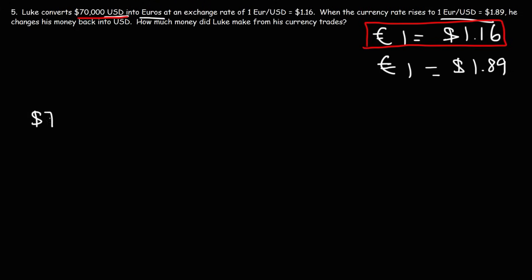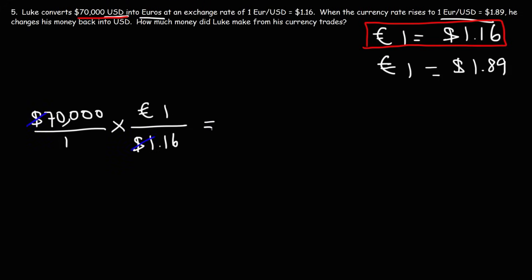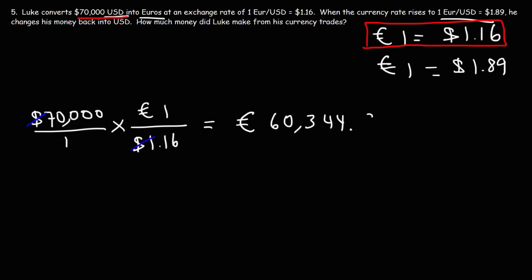We have $70,000 over 1, and since $1.16 corresponds to 1 euro, we put dollars on the bottom so the dollar units cancel. Because 1.16 is on the bottom we divide: 70,000 divided by 1.16 equals 60,344.83 euros.